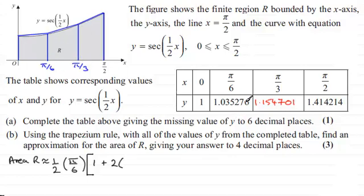This height is 1.035276. We add the next height when x is π/3, which is 1.154701. Then we add the last height, which is 1.414214, and close the bracket.